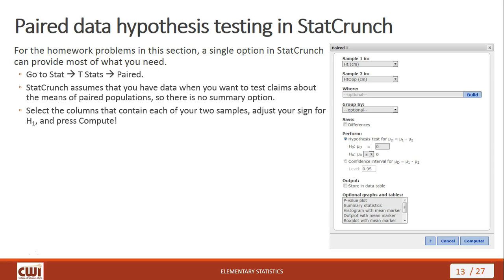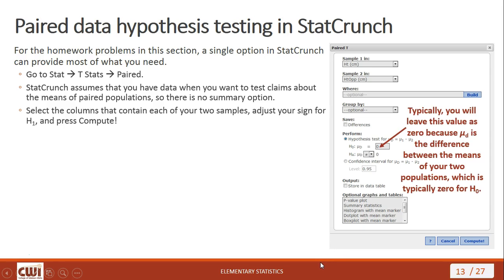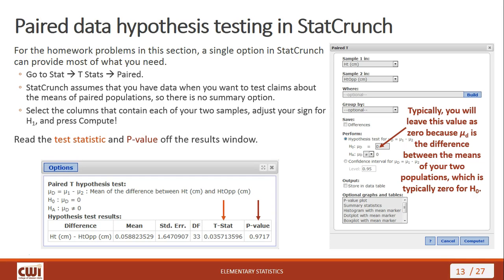For confidence intervals in StatCrunch, use the same menu: Stat > T-Stats > Paired. In the options window, switch the radio button from hypothesis test to confidence interval, make sure the null value is 0, and set your confidence level appropriately. Press Compute and read the lower and upper limits from the results window.